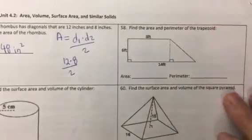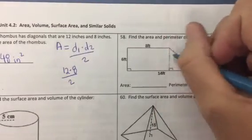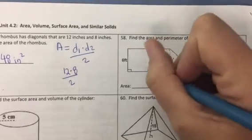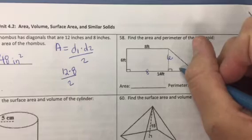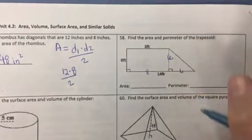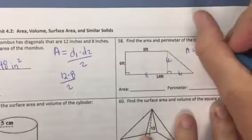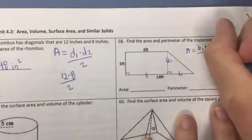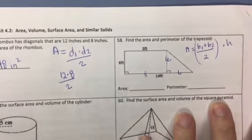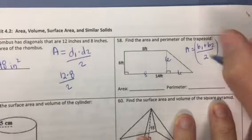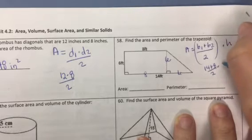In number 58, we are finding the area and perimeter of the trapezoid. You really could break this one down into a rectangle and a triangle since it's a right trapezoid, but let's just pretend for a minute that we can't. If we use the formula for the area of the trapezoid, it's the average of the two bases. So base 1 plus base 2 divided by 2 times the height.